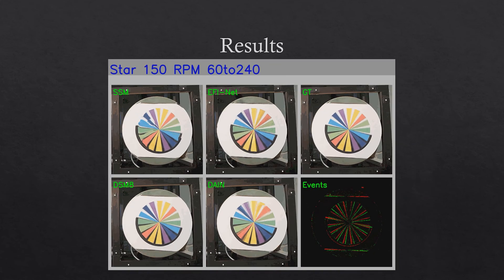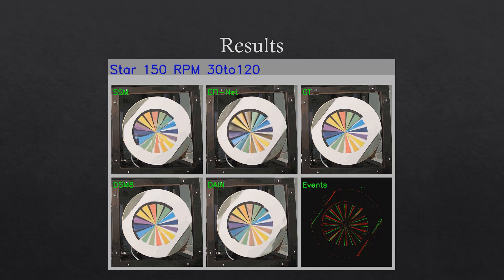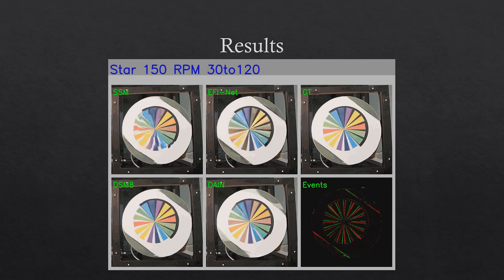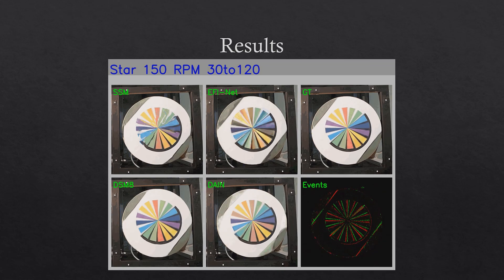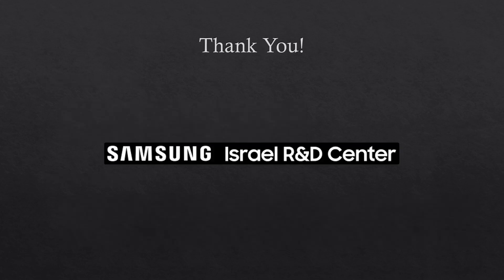Let's take a look at some results over time. It can be seen that when the input FPS is lower, the network is less vulnerable. You can refer to supplementary material for more examples. Our work outperforms others by more than 5 dB on the UZH dataset, and also on our dataset when receiving keyframes at 30 FPS. Thank you for your attention.